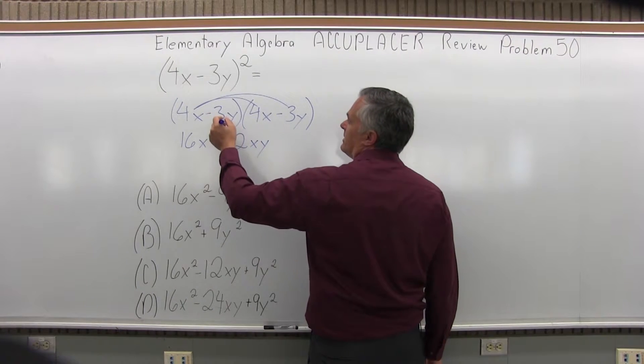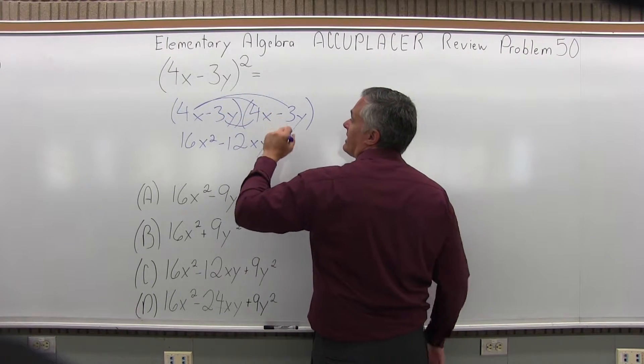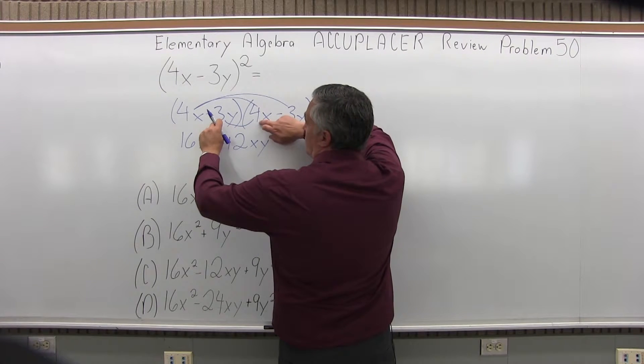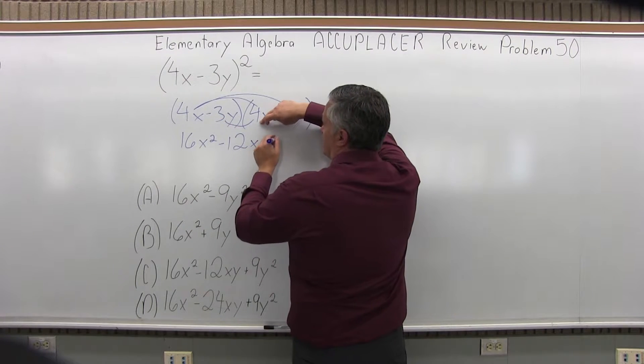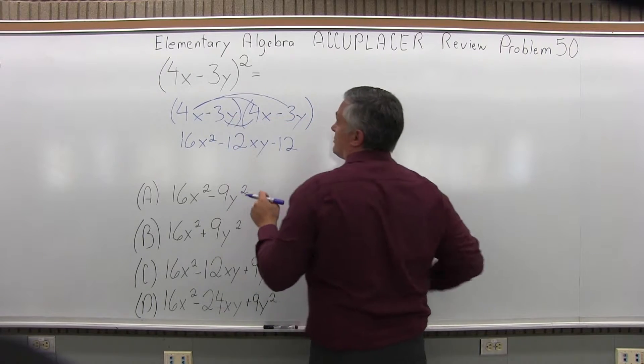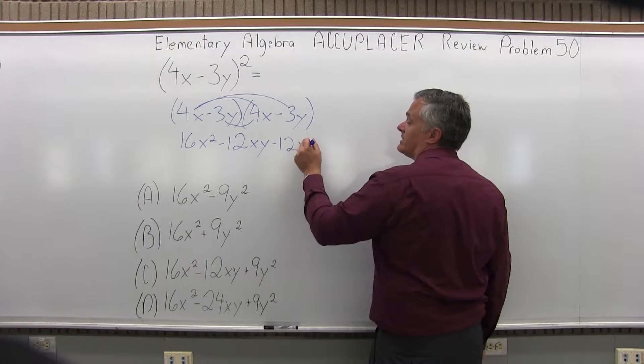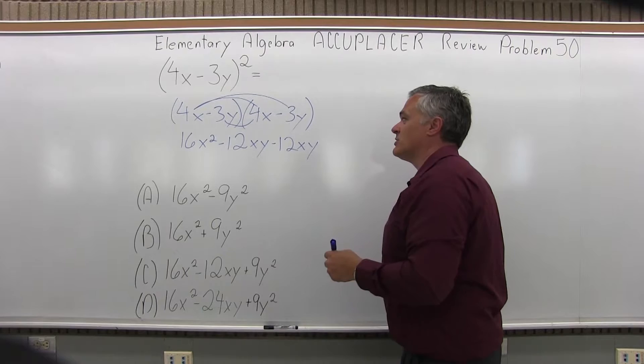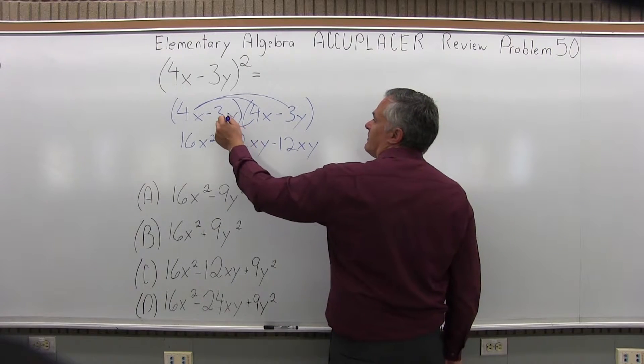And now, negative 3y times 4x. So negative 3 times 4, do the numbers first, is negative 12. And then y times x would be yx. So again, xy is the same alphabetically as most traditional.